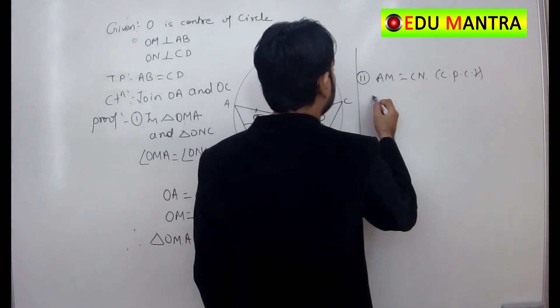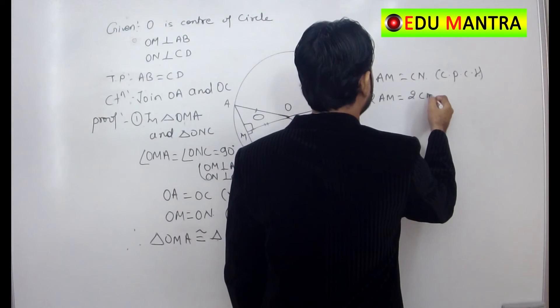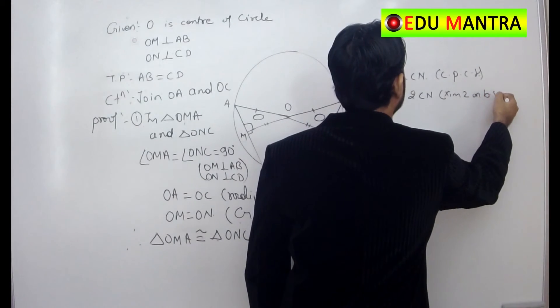So multiplying two times on both sides, two times of AM is equal to two times of CN, multiplying two on both sides.